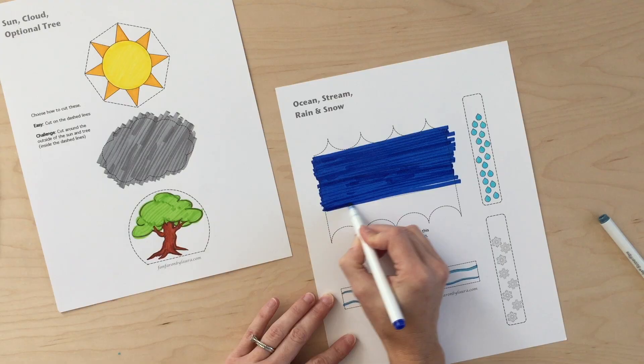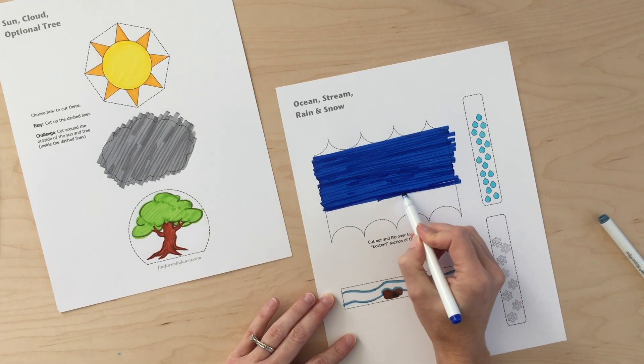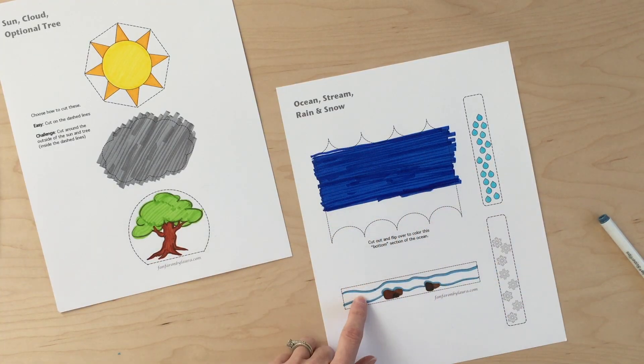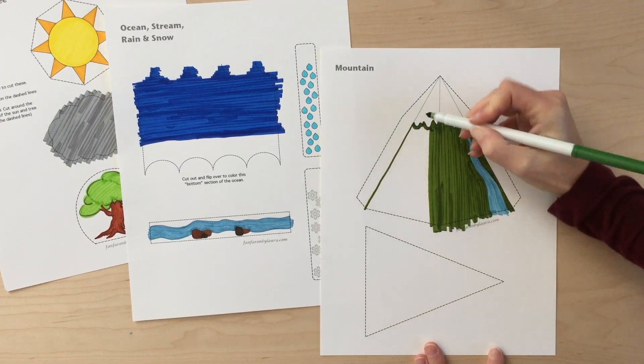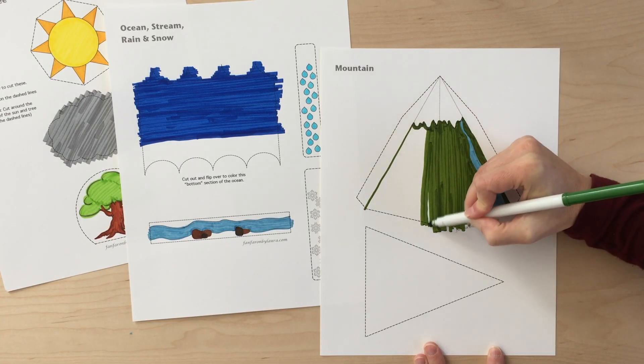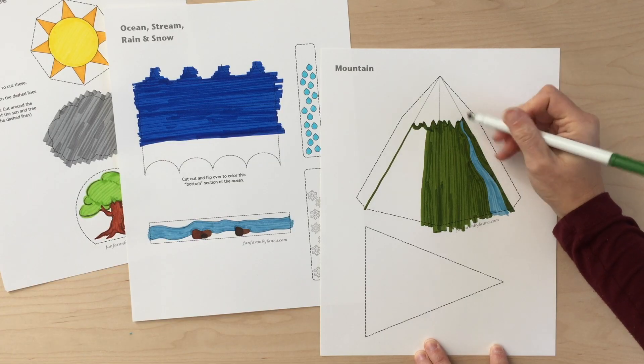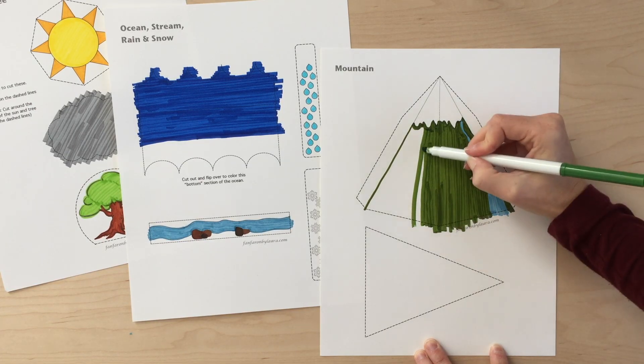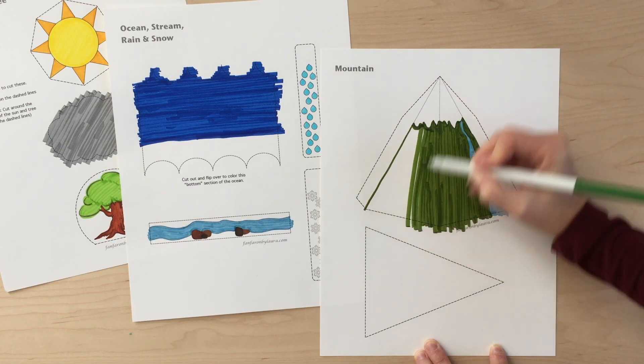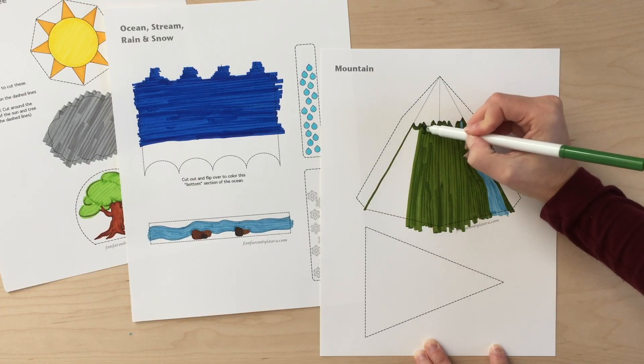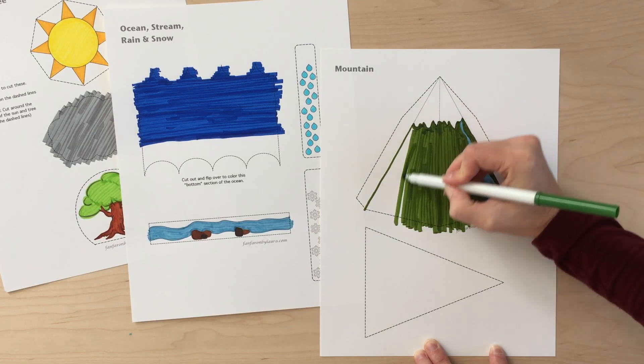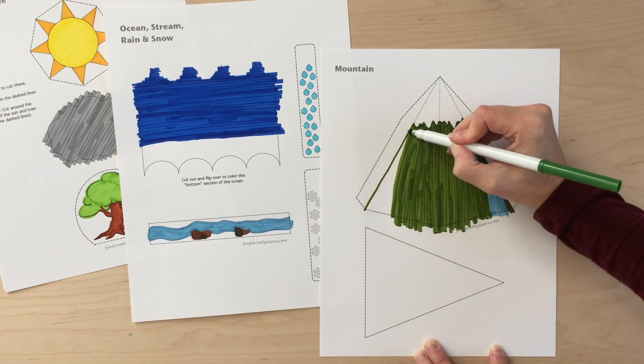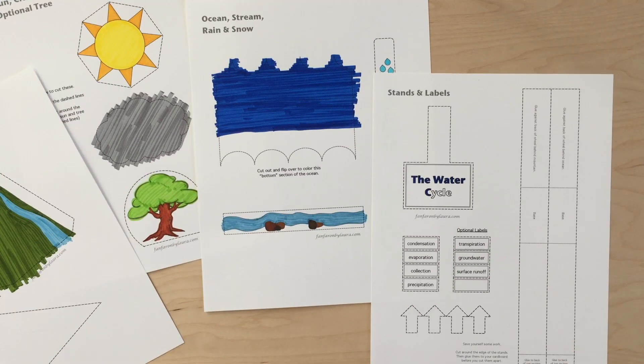This part right here we're actually going to need to color the other side of, so you don't have to color that part right now. This is your stream and some rocks. The mountain has snow on top of it, so I'm leaving that part white. Then I added some snow melt maybe turning into a waterfall and coming off the side of the mountain. I'm coloring the rest of it green because this particular mountain is covered in trees. You can make yours a brown, dusty, rocky mountain if you like. This is going to be the back of the mountain. You won't see it in the finished water cycle, so don't worry about coloring that.